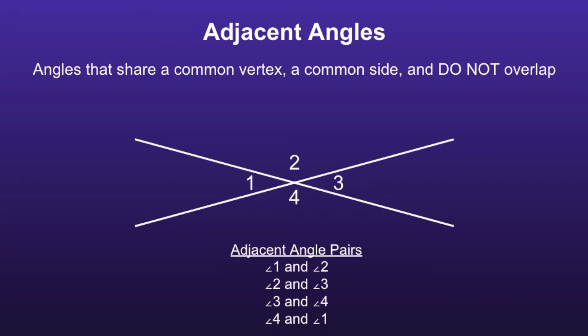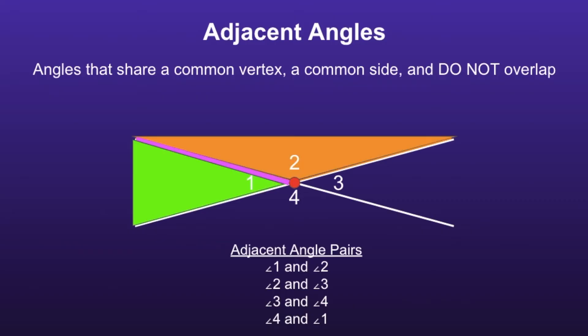We can tell that angle 1 and angle 2 are adjacent angles because they share a common vertex, they share a common side, and they do not overlap. Notice when I shade in those angles, they do not overlap at all.